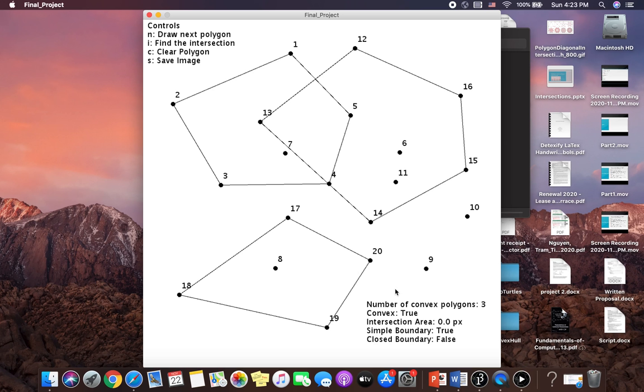If you look at this corner, you can see that this will print out the number of convex polygons and it will find the intersection area. Because in this case, we don't have the intersection area, so the area is zero.